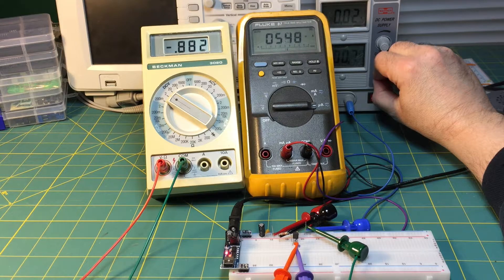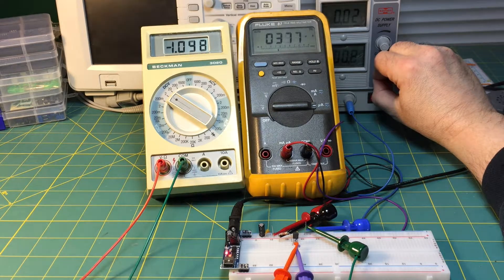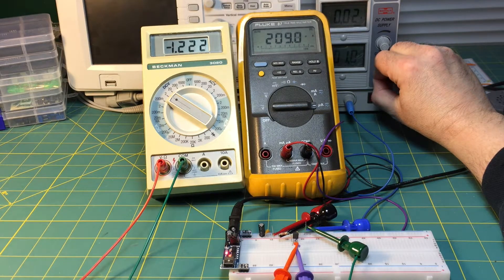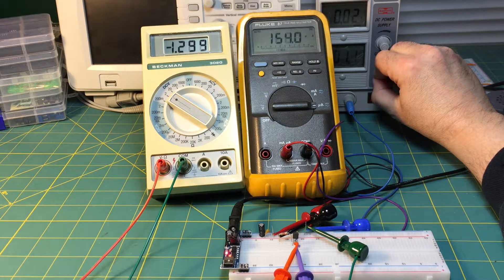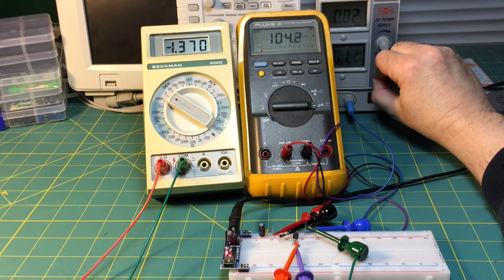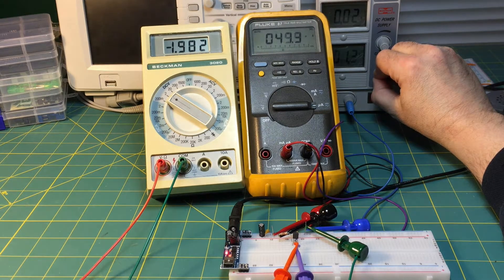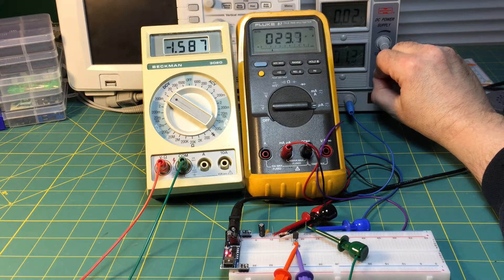And if we bring this gate voltage high enough the drain current should go to zero. Let's see where it is, I don't want to overshoot this.